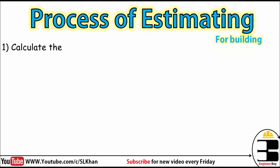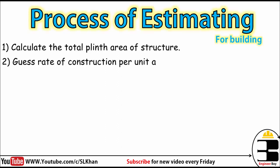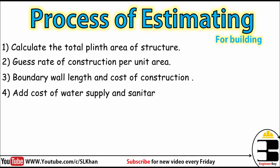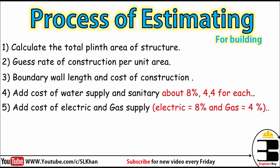What steps should we follow to do the rough cost estimate of a building based on the plinth area of structure method? First, we calculate the total plinth area of the structure. Then we guess the rate of construction per unit area. Then we calculate the boundary wall length and cost of construction. After that, we add water supply and sanitary cost — about 8% and 4% each.